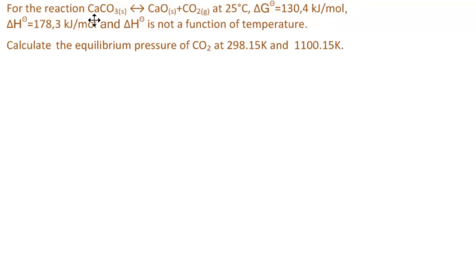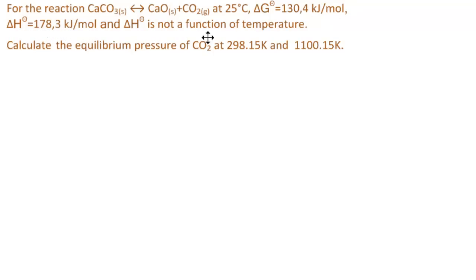The problem: for the reaction CaCO3(s) → CaO(s) + CO2(g) at 25°C, ΔG° = 130.4 kJ/mol and ΔH° = 178.3 kJ/mol. The change in enthalpy is not a function of temperature. We are to calculate the equilibrium pressure of CO2 at 298.15 K (25°C) and at 1100.15 K.